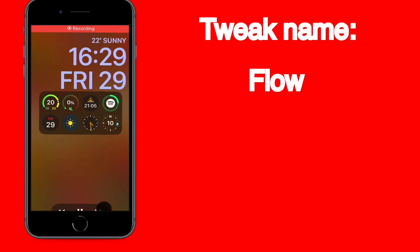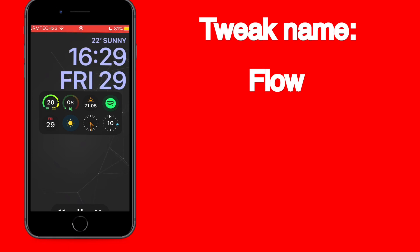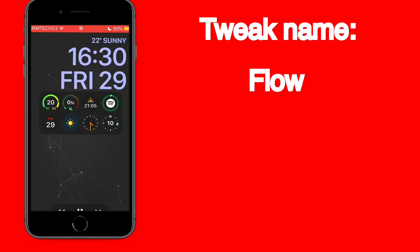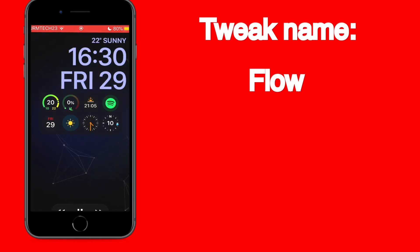So guys, this is Flow, which is a tweak for your music. The background reflects the background of the album artwork on the music — wherever you're listening from, Spotify, Apple Music, or your own music on the device — it will display the background color to your device.